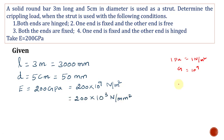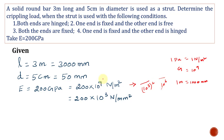Since 1 meter equals 1000 mm, to convert to Newton per mm squared we divide by (10³)² = 10⁶. So 200 × 10⁹ divided by 10⁶ gives us 200 × 10³ Newton per mm squared. We must maintain consistent units for all given data.